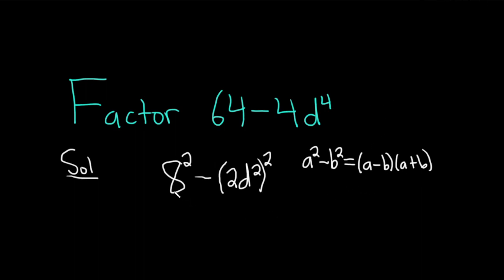So, in this case, our a is 8, and our b is 2d squared. This will be 8 minus 2d squared times 8 plus 2d squared. And that's pretty good.